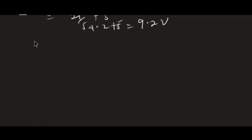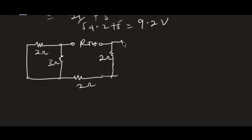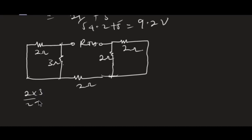To find RTH, I deactivate all sources by short-circuiting them. I short-circuit the 7 volt and 10 volt sources. Looking at the deactivated circuit, I can see that the 2 ohm and 3 ohm resistors are in parallel on one side, and the 2 ohm and 2 ohm resistors are in parallel on the other side. The 2 ohm in parallel with 3 ohm gives: (2×3)/(2+3) = 6/5 = 1.2 ohms.